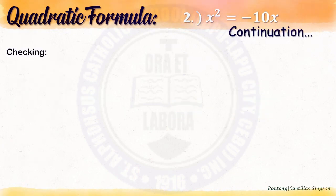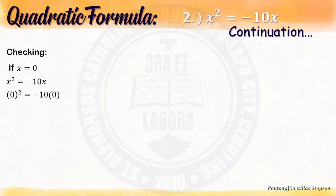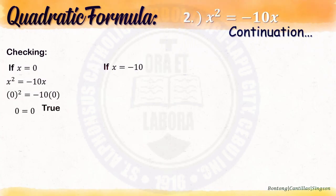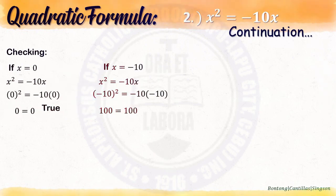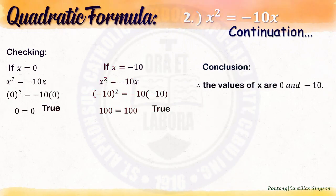Checking and conclusion: if x equals 0, substitute into the given equation, simplify — 0 equals 0, which is true. If x equals negative 10, substitute the value, simplify — 100 equals 100, which is true. Conclusion: therefore, the values of x are 0 and negative 10.